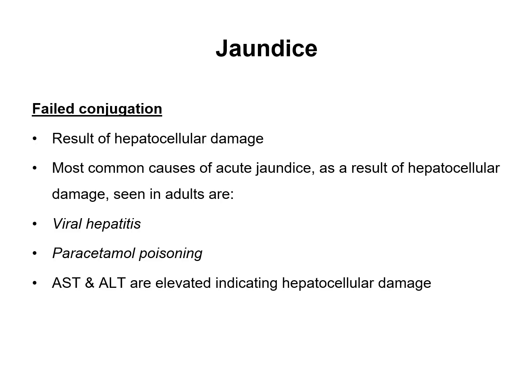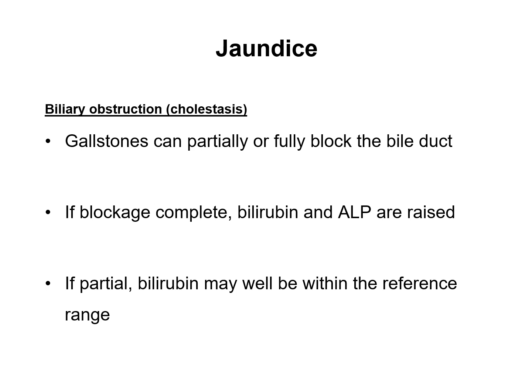The normal reference range for bilirubin is 3 to 22 micromolar per litre. The second reason jaundice can occur is failed conjugation, resulting from hepatocellular damage. The most common causes of acute jaundice from hepatocellular damage are viral hepatitis and paracetamol poisoning, and there are also increased levels of AST and ALT. The third reason is biliary obstruction, also known as cholestasis — gallstones can partially or fully block the bile duct. A complete blockage increases both bilirubin and ALP levels, whereas a partial blockage may leave bilirubin within the normal range.